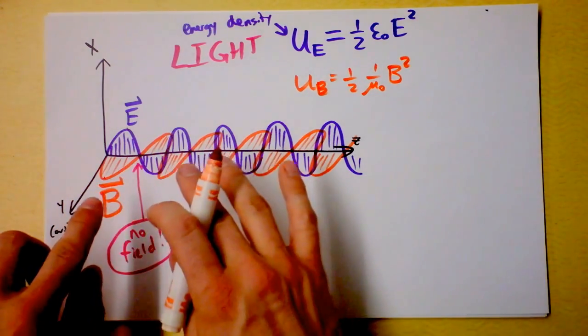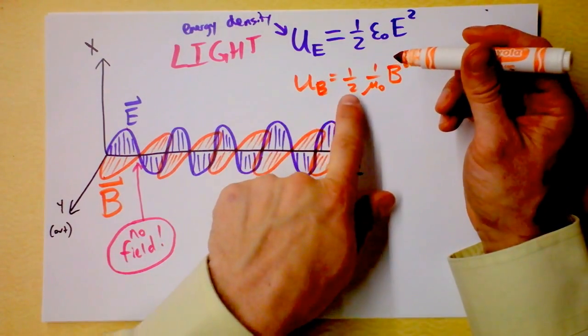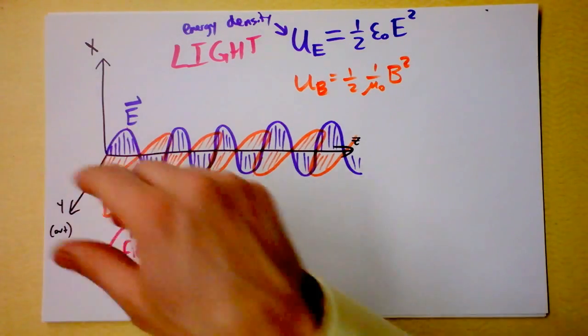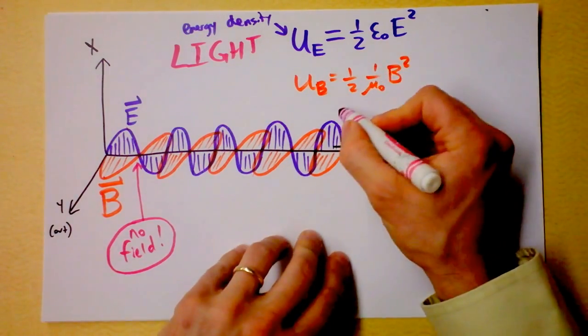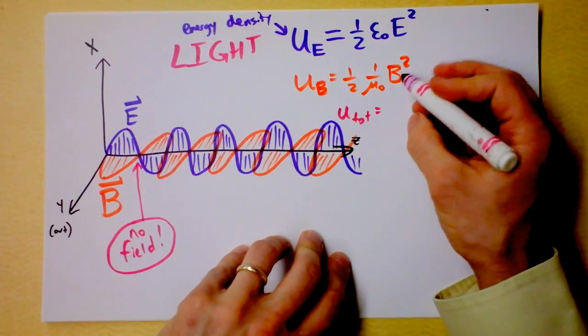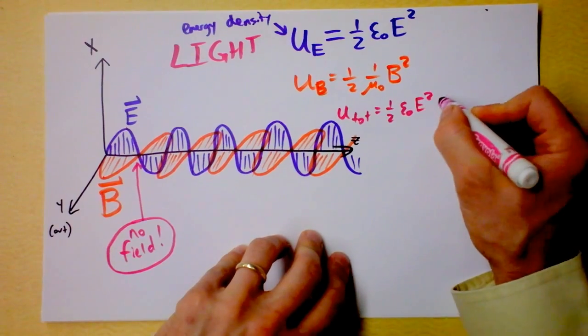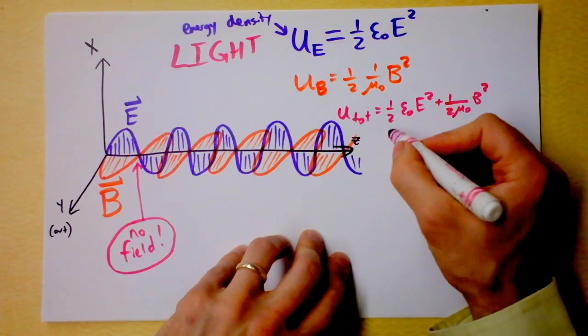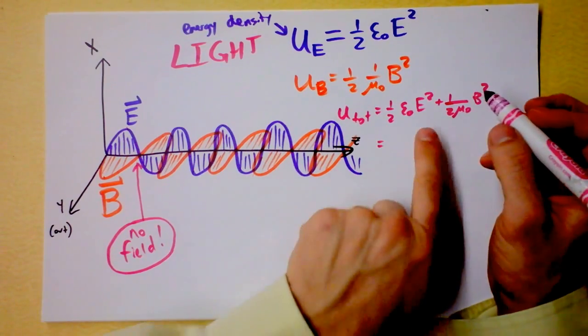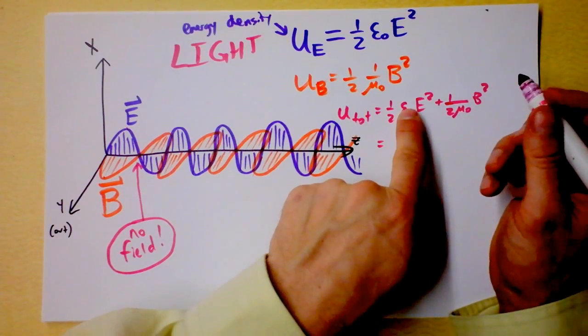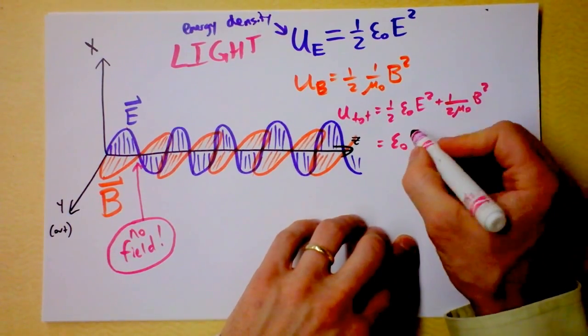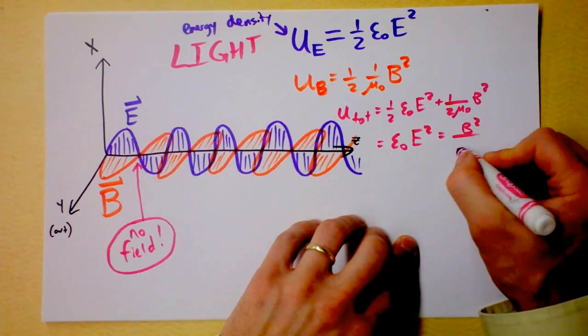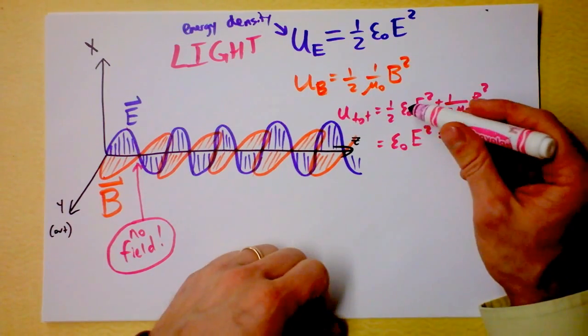We've got both of those at the same time, and the electric field and magnetic field contribute the same amount of energy. The total energy density will be ½ε₀E² + ½(B²/μ₀). Since each contributes the same amount, that's simply two of this or two of that, so we can write another equivalence: that's ε₀E² and that's also the same as B²/μ₀.